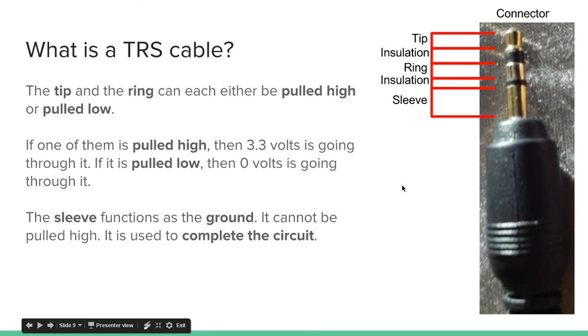The tip and the ring can either be pulled high or pulled low. If one of them is pulled high, then 3.3 volts is going through it. If it is pulled low, then 0 volts is going through it. The sleeve functions as the ground. It cannot be pulled high, it is used to complete the circuit.